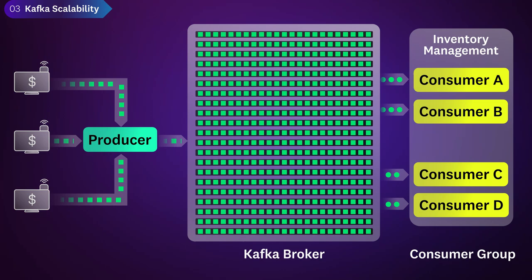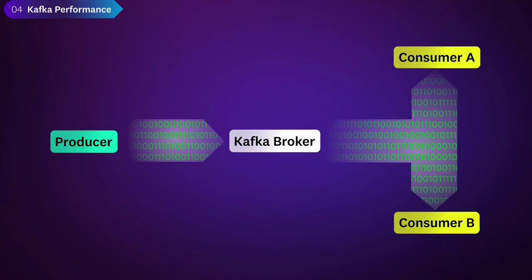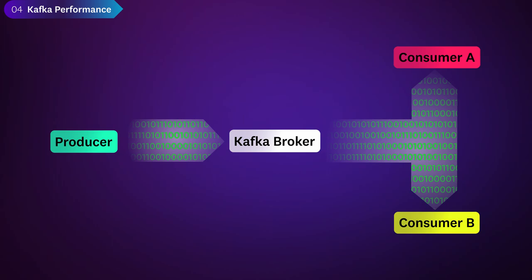In our example from before, the retailer could use inventory management software and CRM software to process the same sales data at the same time. One last advantage of Kafka is speed — it can stream, store, and process millions of reads and writes every second. Kafka was designed for low latency and can be optimized for throughput by batching and compressing messages. The Kafka failsafe mechanism also helps keep your data pipelines running smoothly.